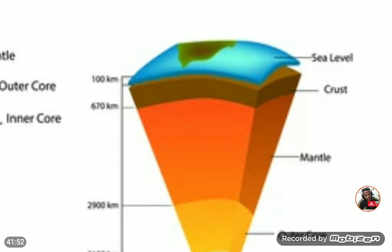Just below the crust, at the top of the upper mantle, is an area of molten rock called the asthenosphere — A-S-T-H-E-N-O-S-P-H-E-R-E. This is where scientists believe that molten rocks, known as magma, move slowly around, causing sections of the crust — called plates — to shift. This movement of molten rock in the upper mantle causes shifting of crust sections to produce a phenomenon called plate tectonics, which we will cover in the next video.